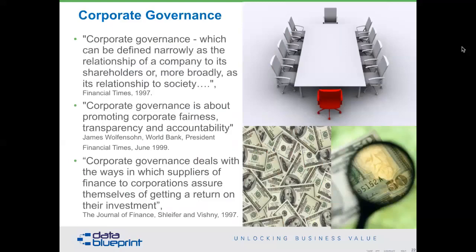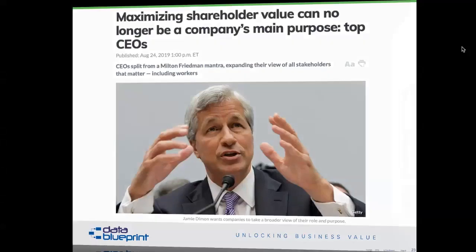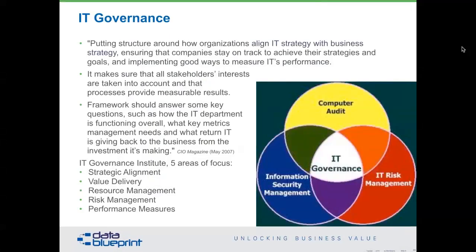You've probably also heard the controversy about the SAT dropping their plans for an adversity score — very interesting data problems there. These fall under corporate guidance. And then we also have IT guidance. What is IT focused on? They'd like to be aligned with the business strategy and provide measurable results. There are five areas they recommend: strategic alignment, value delivery, resource management, risk management, and performance measures.